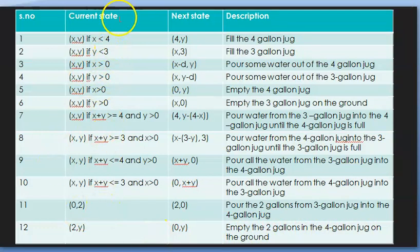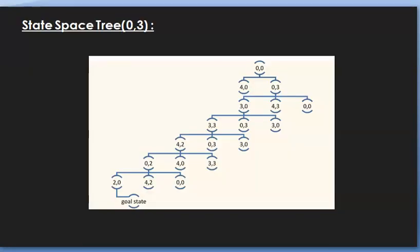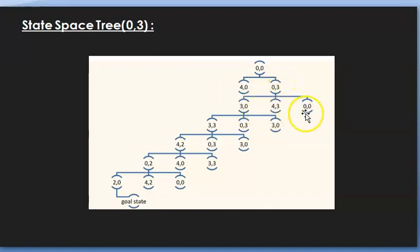So these are the rules — the entering state and the next state — and we have to implement them in Prolog to get the final solution. Now let us look at the two solutions that we can reach using these rules. Initially we have state (0, 0) and we have two choices: either fill the 4 liter jug or the 3 liter jug.